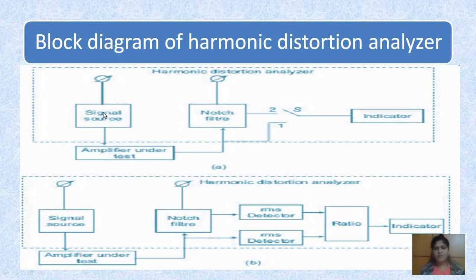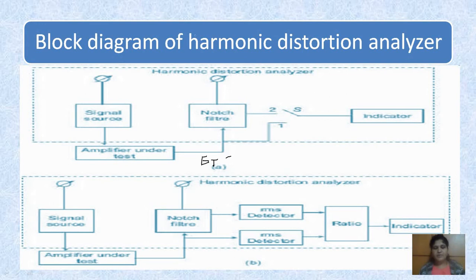From the input signal, the amplifier amplifies it, and the output consists of harmonics plus fundamental frequency — that is ET, which equals the fundamental component plus harmonic components. This is given to the notch filter. The notch filter suppresses the fundamental frequency and passes only the harmonics.